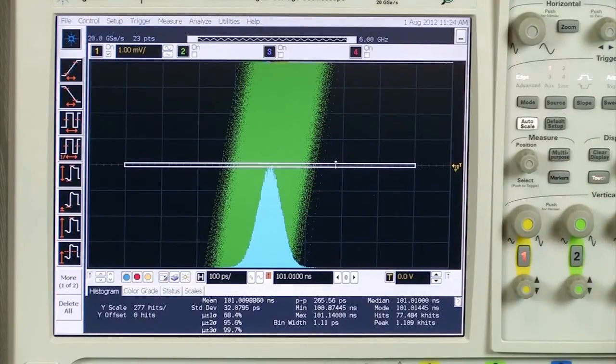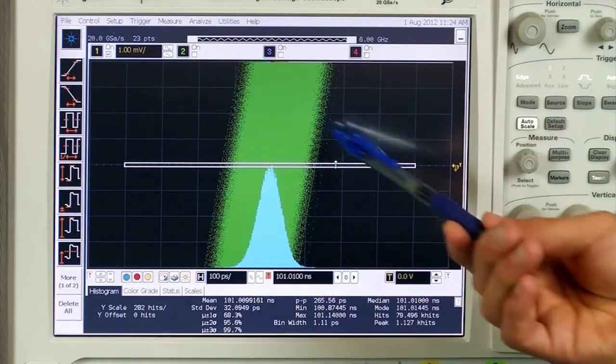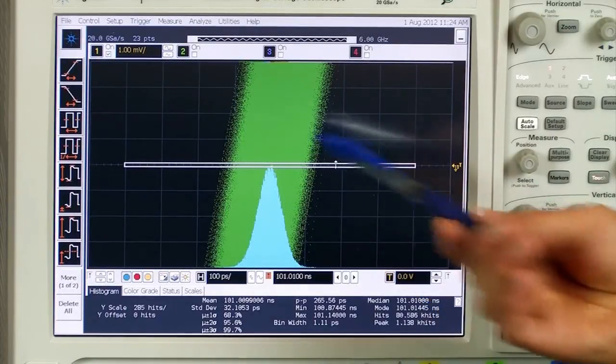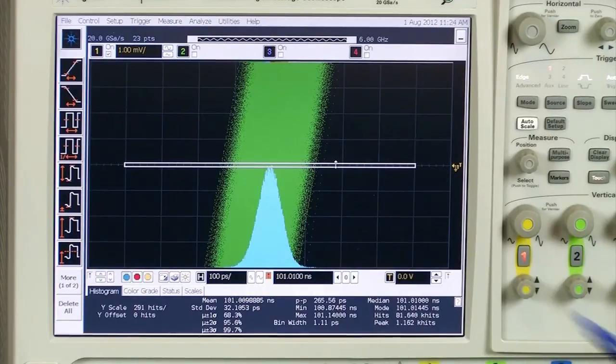We're zoomed in on it at about 100 picoseconds per division, and we can see the variation here with the persistence setting on the scope on. Here is a histogram, and our histogram is showing us we have over 30 picoseconds of RMS jitter on our signal.